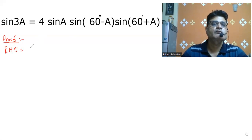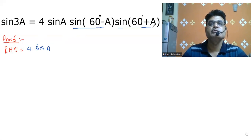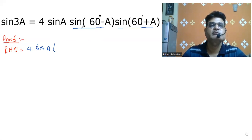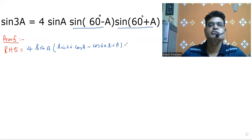We have 4 sin A. Now I have used the formula sin(A - 60°) and sin(A + 60°). For sin(A - 60°), I expand it as: sin A cos 60° minus cos A sin 60°.